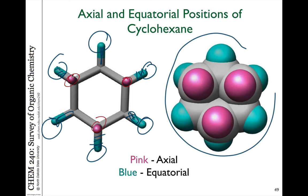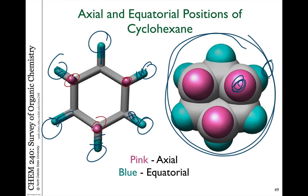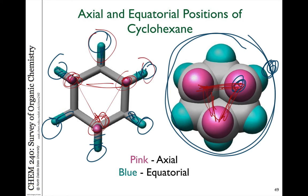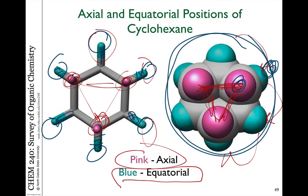Out in the equatorial region there's more space. Notice how close in space these pink axial hydrogens are — even though they're on every other carbon, they're very close in space, whereas the equatorial hydrogens from one carbon to the next are much further apart. There's a very different steric environment for the equatorial versus the axial hydrogens.